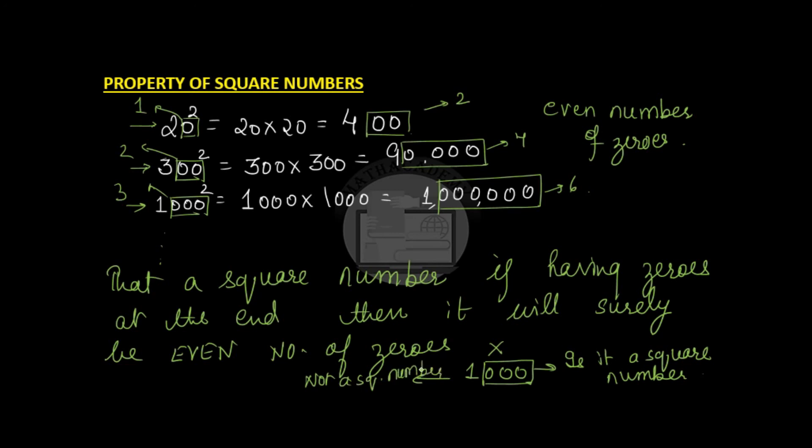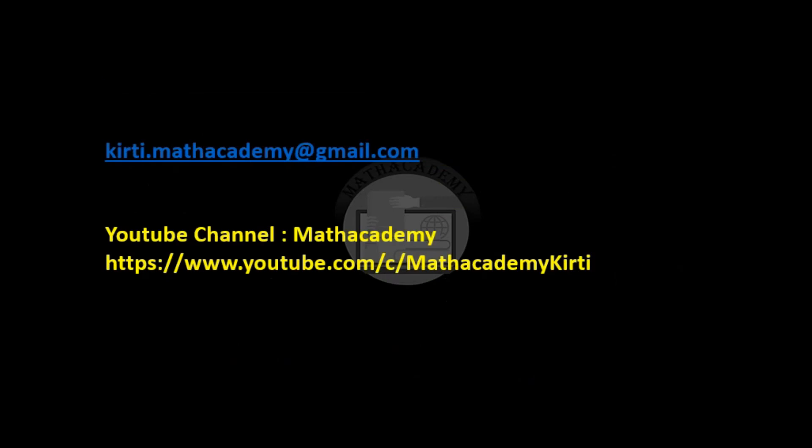I hope these two properties are very clear to everyone. The first property: a square number will never end with 2, 3, 7, or 8 as its ones digit. The second property: if a square number ends with zeros, it always has to be an even number of zeros — none of the square numbers will have an odd number of zeros. In our next video we will cover more properties of square numbers. If you have any doubts you can send me an email at kitty.mathacademy@gmail.com. This is my YouTube channel Math Academy.